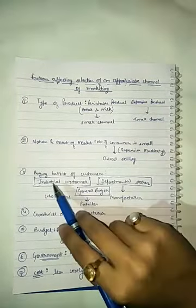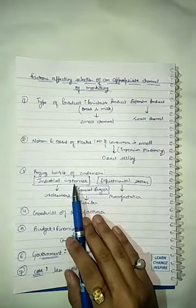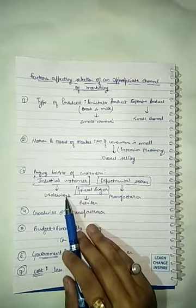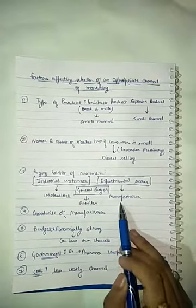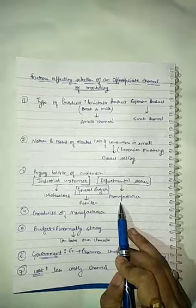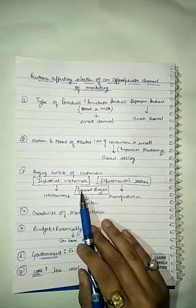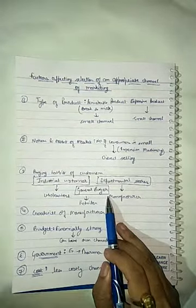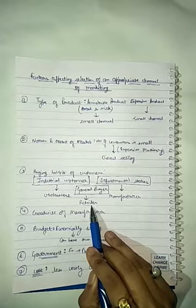Next is the buying habit of the customer. If our customer is an industrial customer, that is B2B selling (business to business selling), they purchase goods from the wholesaler. If our customer is a departmental store, they purchase products directly from the manufacturer, so we can opt for direct selling channel. And if our customers are general buyers, for example for FMCG products like soaps and shampoo, retailers are the best channel through which we can reach our customers.